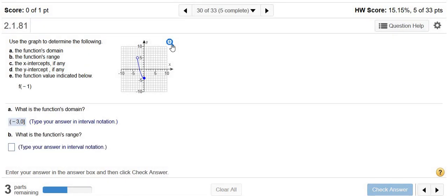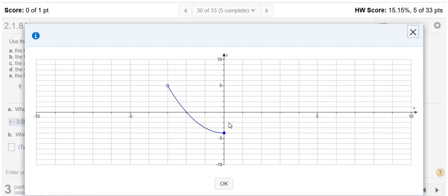All right, the range is all the possible y values. So I'm going to click on this magnifying glass. And you go from the bottom up. So let's see, 1, 2, 3, 4. So negative 4, and it's a bracket all the way to 5, and it's a parentheses because we have a hole. So negative 4 to 5. I'm going to close this.